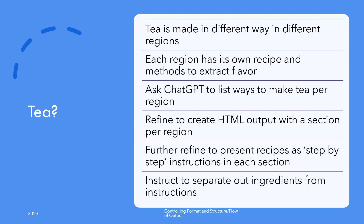If you are trying to come up with recipes, you can tell ChatGPT to come up with ways of making tea per region. Note that tea making is an art form where the techniques are very different — for example, Turkish tea makes no comparison with the way it is done in India or the UK. You can ask ChatGPT to come up with a structured HTML output where regions are separated by H1 headings, and each tea-making technique is presented as step-by-step instructions with ingredients listed up top.